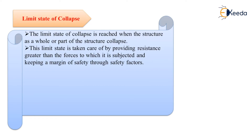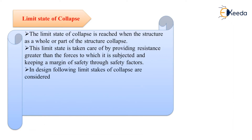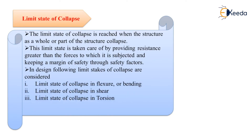The limit state of collapse is taken care of by providing resistance greater than the forces to which the structure is subjected, and by keeping a margin of safety through safety factors. This limit state corresponds to flexure, shear, torsion, and axial load — or compression.